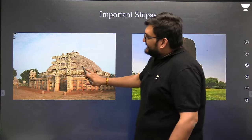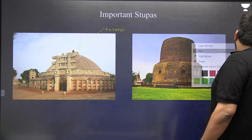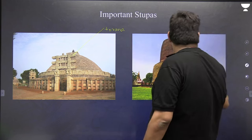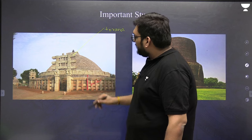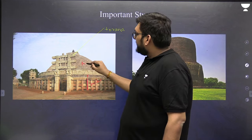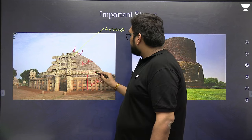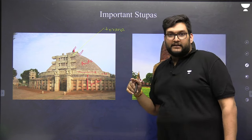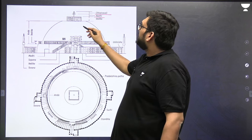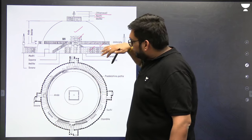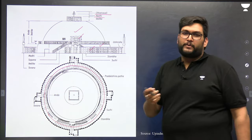Let me show you the Sanchi Stupa — one of the most celebrated stupas in India. Here you can see the Torana — the entry gate. This is the Suchi, the railing. This is the Medhi — the base on which the whole stupa rests. Then this is the Anda, this is the Harmika, this is the Chhatravali or Chhatras, and the central pillar is the Yashti. And you can see there is a path around the stupa — that is your Pradakshina Path.